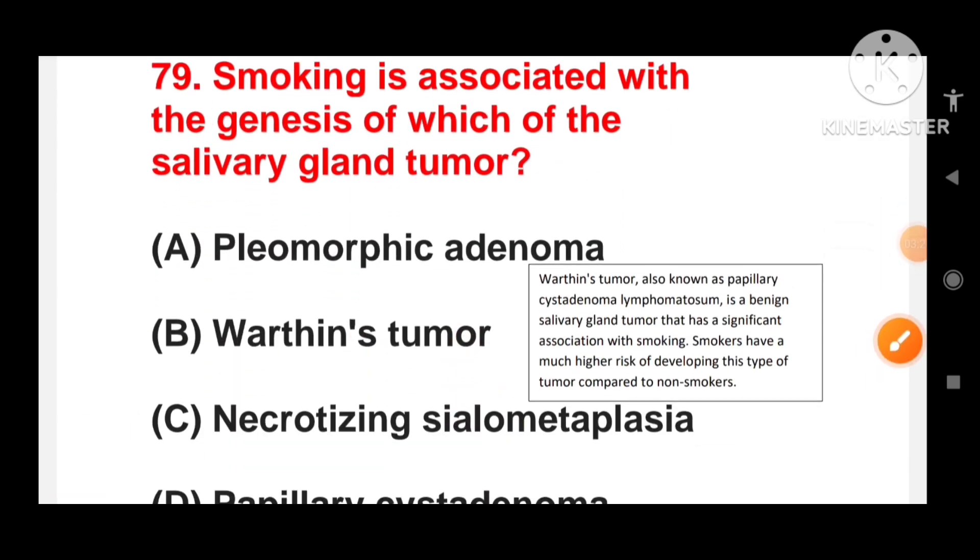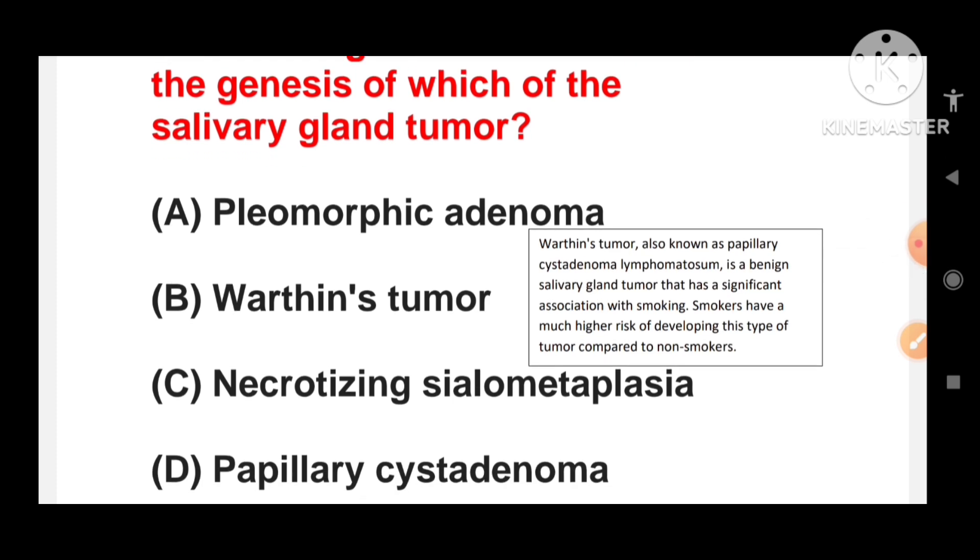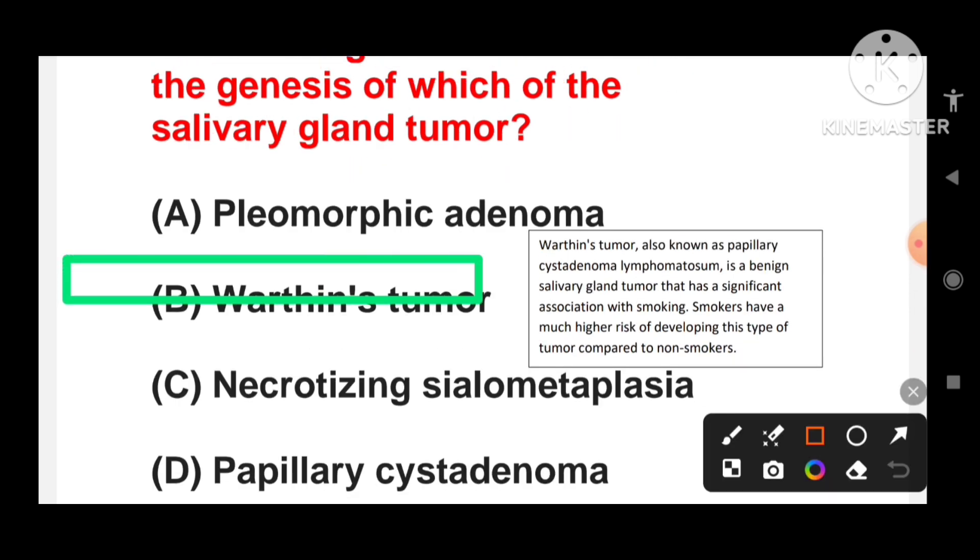Smoking is associated with the genesis of which of the salivary gland tumor? Pleomorphic adenoma, Warthin's tumor, necrotizing sialometaplasia, or papillary cystadenoma? Warthin's tumor is a benign salivary gland tumor that has a significant association with smoking. Smokers have a much higher risk of developing this type of tumor compared to non-smokers. So the correct answer is Warthin's tumor.